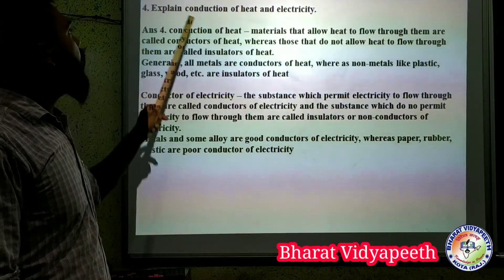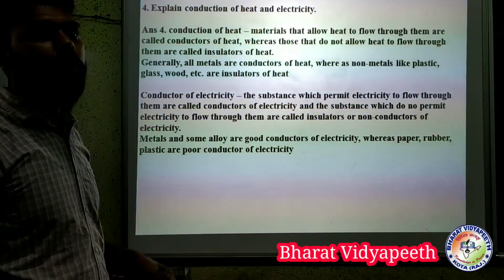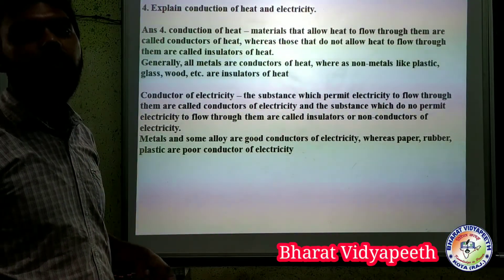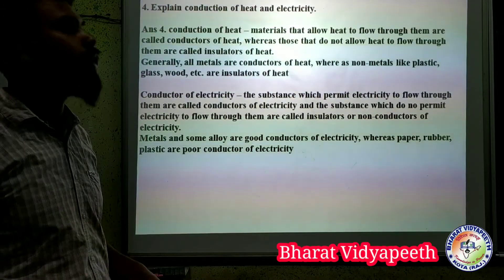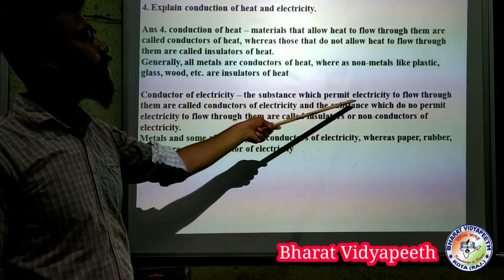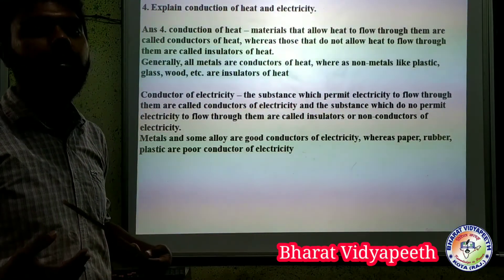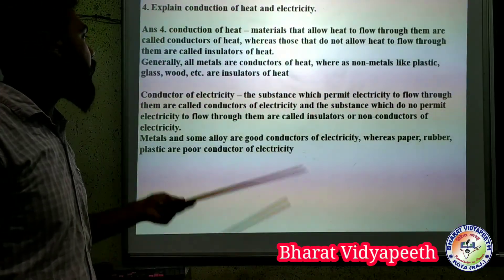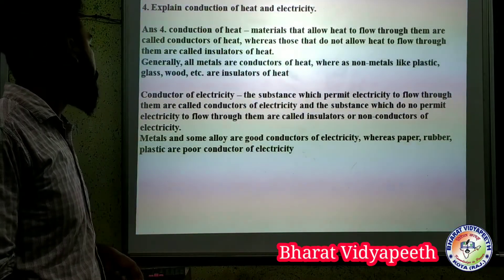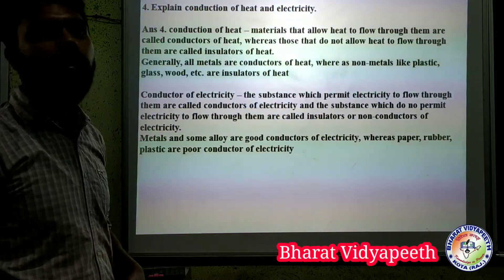An important question is: explain the conduction of heat and electricity. Heat conduction refers to which materials conduct heat and which do not. Substances that allow electricity to pass through are called conductors of electricity, and those that do not are called non-conductors or insulators. Metals are good conductors of both electricity and heat.